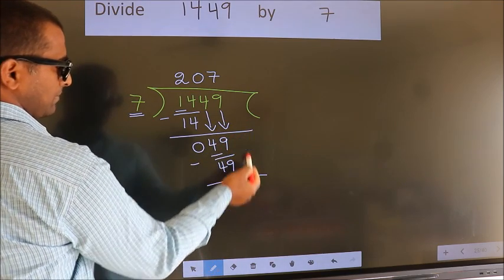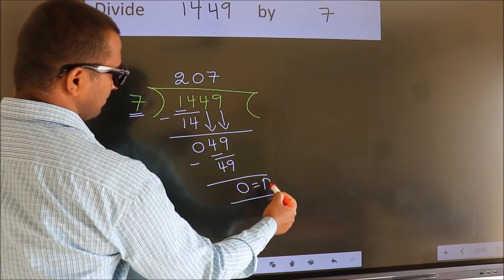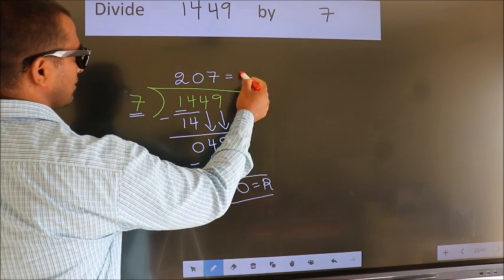No more numbers to bring down. So we stop here. This is our remainder. This is our quotient.